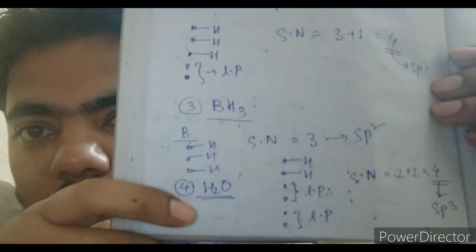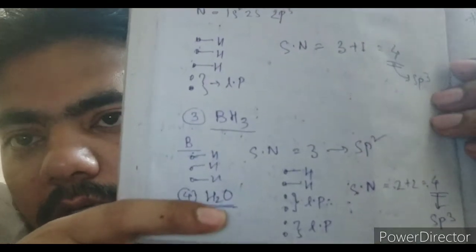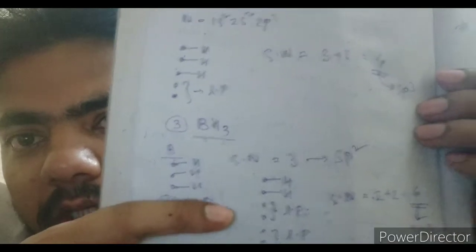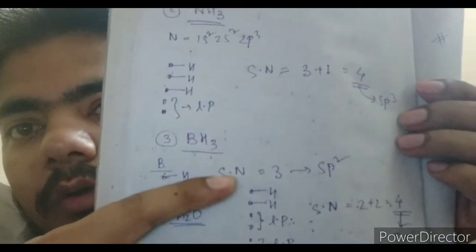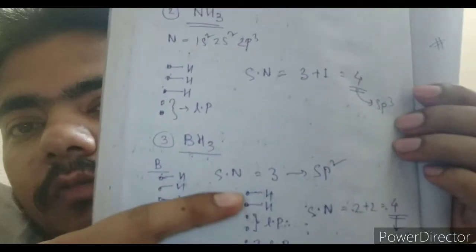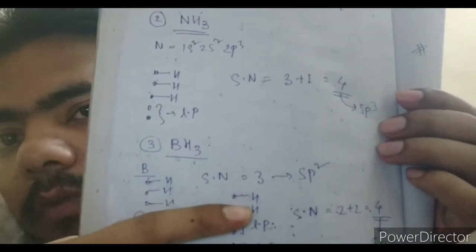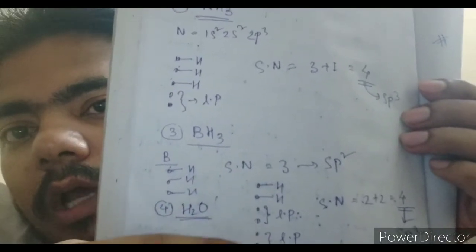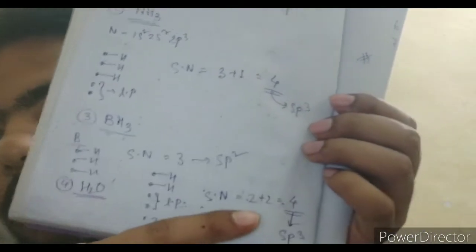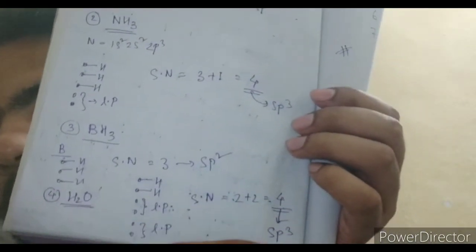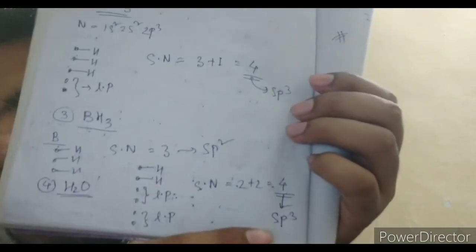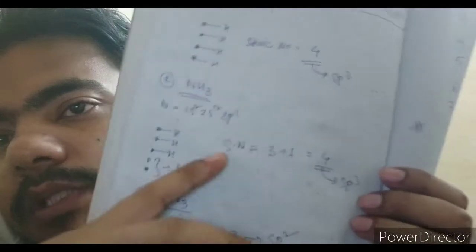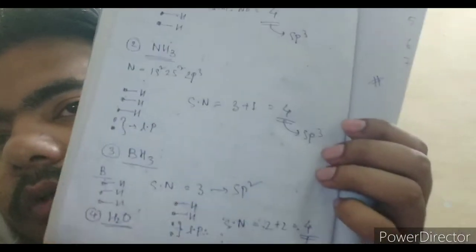One more example: water, H2O. Oxygen is the central atom and it has six valence electrons. The first two make one sigma bond each with the two hydrogens, and the remaining four electrons form two lone pairs. The steric number is two sigma bonds plus two lone pairs, which equals four — so that is again sp3 hybridization.